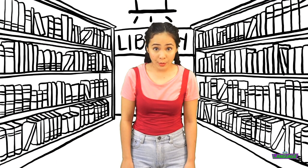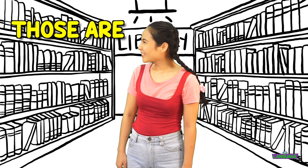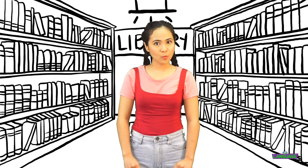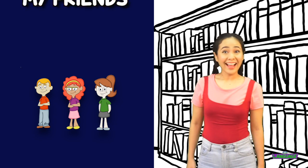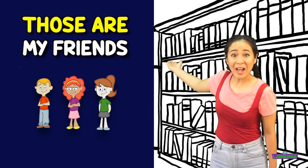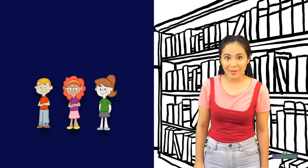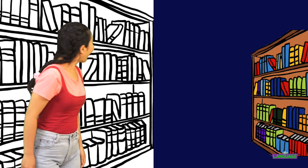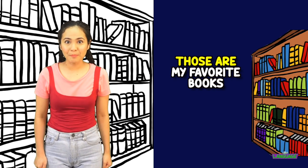We use 'those are' to point out more than one person or more than one object. Those are my friends. I am meeting them in the park this afternoon.